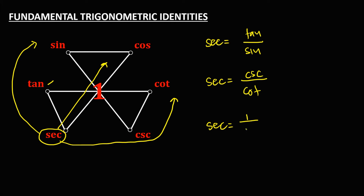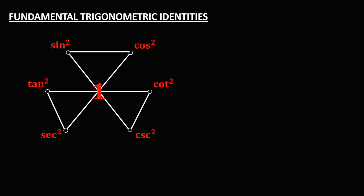The last identity for secant is 1 over cosine. And the last one for secant is the product of these two functions: tangent times cosecant. This is how to find the different fundamental trigonometric identities using this figure.